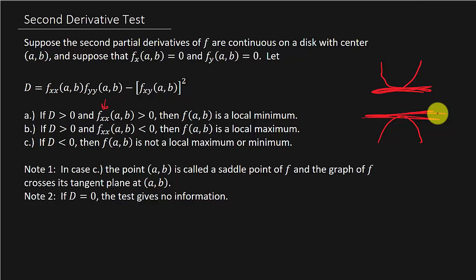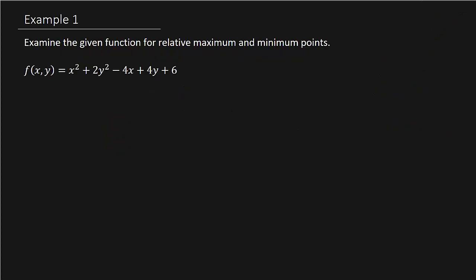Let's look at an example. This first example says: examine the given function for relative maximum and minimum points — relative max and min, local max and min, same thing. We have f(x, y) = x² + 2y² − 4x + 4y + 6. Keep in mind that f(x, y) is the same as writing z equals that expression.